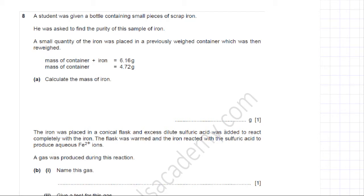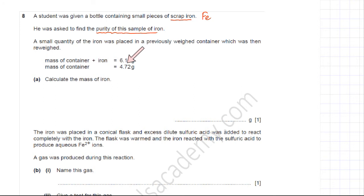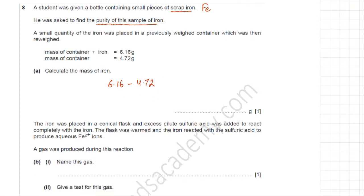This ATP titration question is about finding percentage purity. A student was given a bottle containing small pieces of scrap iron and was asked to find the purity of the sample. A small quantity of iron was placed in a previously weighed container which was then re-weighed. The mass of container plus iron is 6.16 grams, and the mass of the container is 4.72 grams, giving a mass of iron of 1.44 grams.